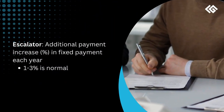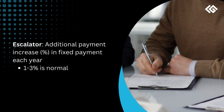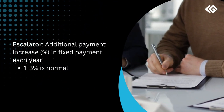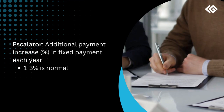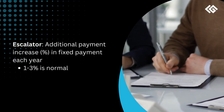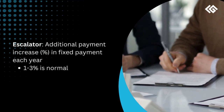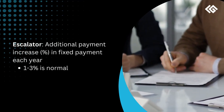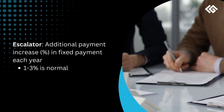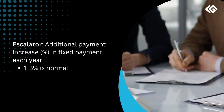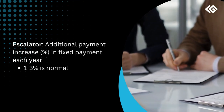Most wind leases have what's referred to as an escalator, which is a percentage increase in the fixed payment each year, usually ranging from 1 to 3%. The escalator is there to help mitigate the effects of inflation, which generally result in the value of the lease payments decreasing over time.